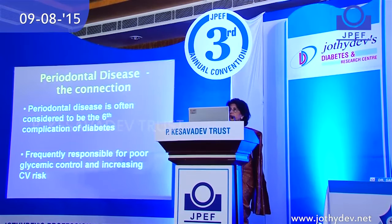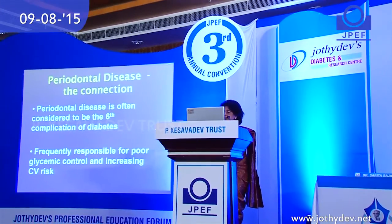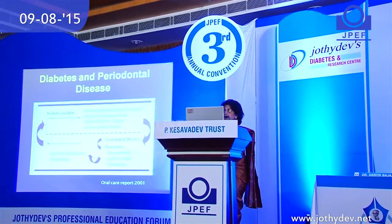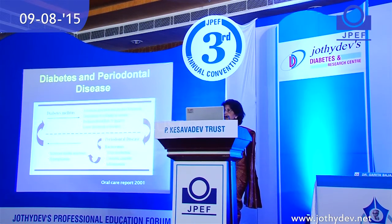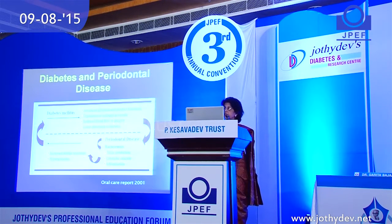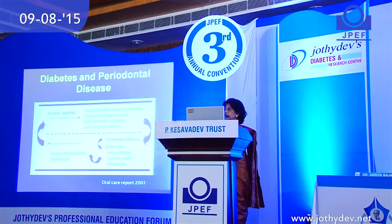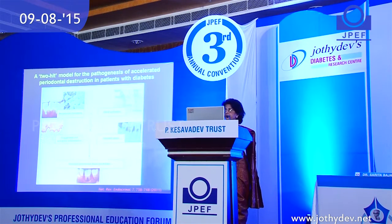Periodontal disease is frequently responsible for not only poor glycemic control but also increasing cardiovascular risk. In terms of pathogenesis, in diabetes we see AGE formation, deposition of collagen, reduced blood flow to the gingiva, and lower resistance to bacteria. Because of bacteremia, there is toxin production and a catabolic cascade, leading to increased insulin resistance and hyperglycemia — the two-hit hypothesis for accelerated periodontal destruction.